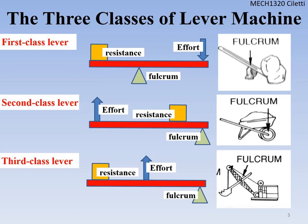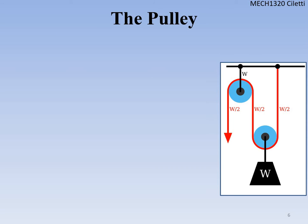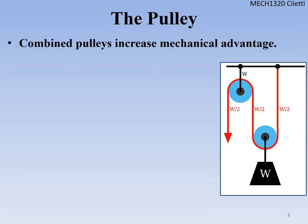Next is the pulley system. Pulleys give us a huge mechanical advantage to lift far more weight than we're normally capable of, simply by increasing the number of pulleys. In this particular pulley system, it cuts the weight in half — W divided by 2. As we combine more pulleys, we increase our mechanical advantage, reducing the work needed. Applications include robots and overhead cranes.